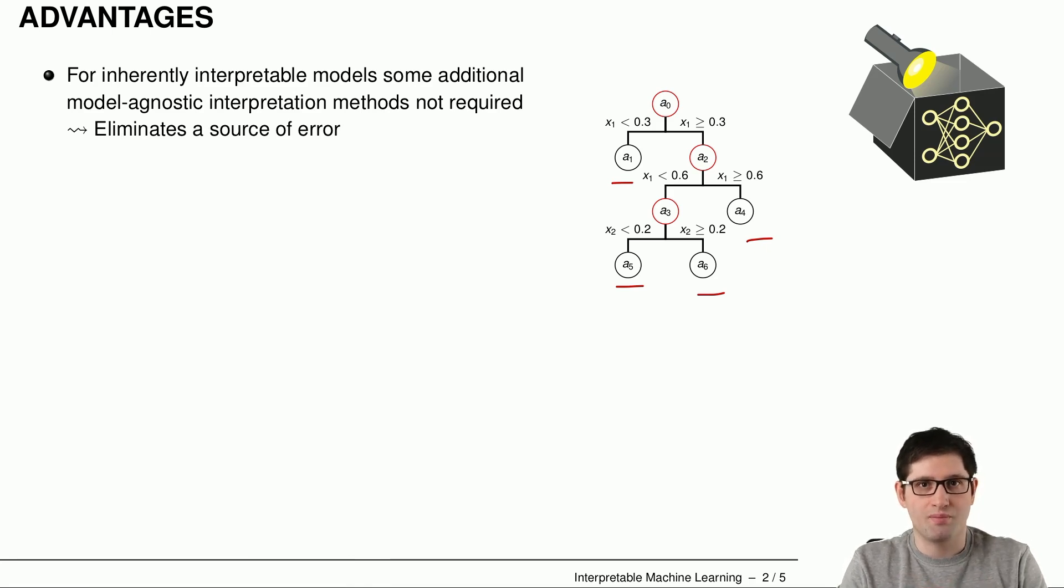If you want to, for example, trace back how a certain prediction was made, then you just have to follow the path here. For example, this path here on the right-hand side. And then you can see by these rules here how this prediction was made, which is already some nice information that you can get for free if you use as learning algorithm a decision tree.